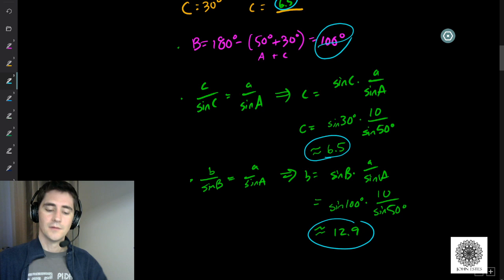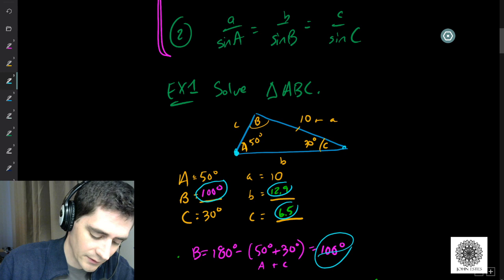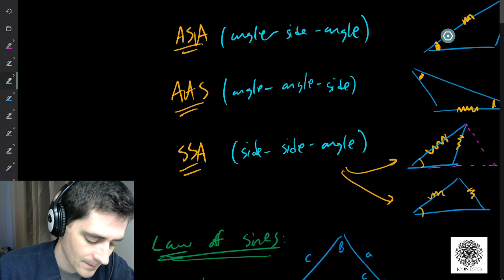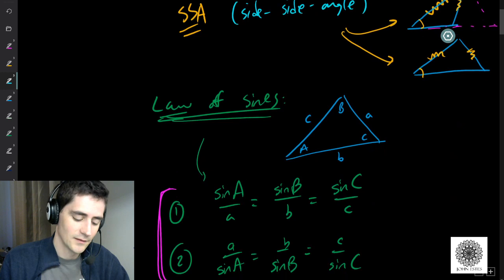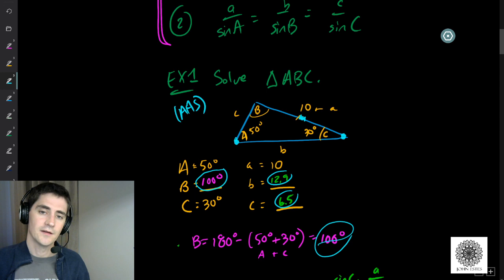Looking back, what case was this? We knew angle A, angle C, and side A — that's angle, angle, side, or AAS. If I had identified this as AAS at the start, I would have known instantly this is a law of sines case. I recommend identifying the case at the beginning of every problem.